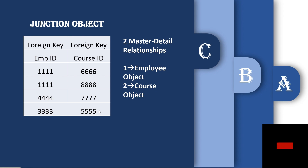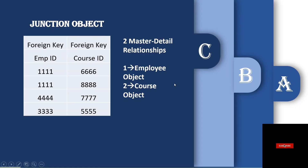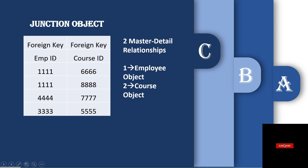Another important point: a junction object has two master-detail relationships. For the first relationship, the Employee table is the master and the junction object is the detail. If the Employee table is deleted, there is no purpose in keeping the employee ID in the junction object, so those records are automatically deleted as well. This is the core behavior of a master-detail relationship — if the master is deleted, the matching detail records are also deleted.